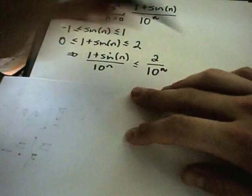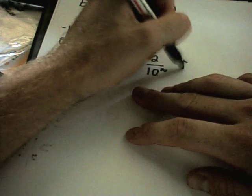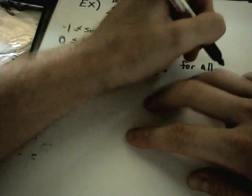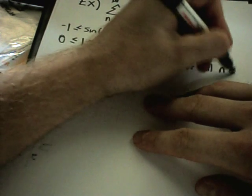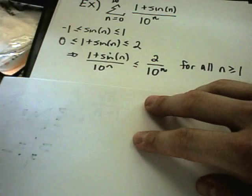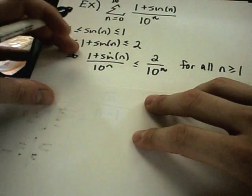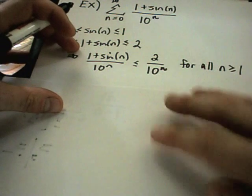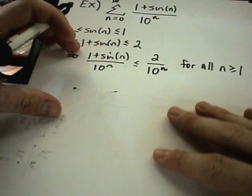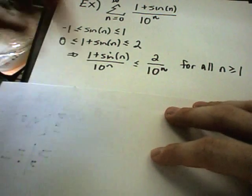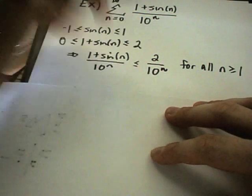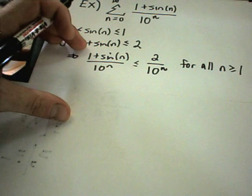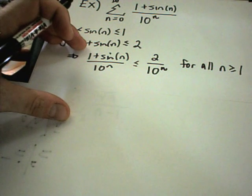For all n greater than or equal to 1. So the idea is: 2 over 10 to the n — do we know anything about that particular series?